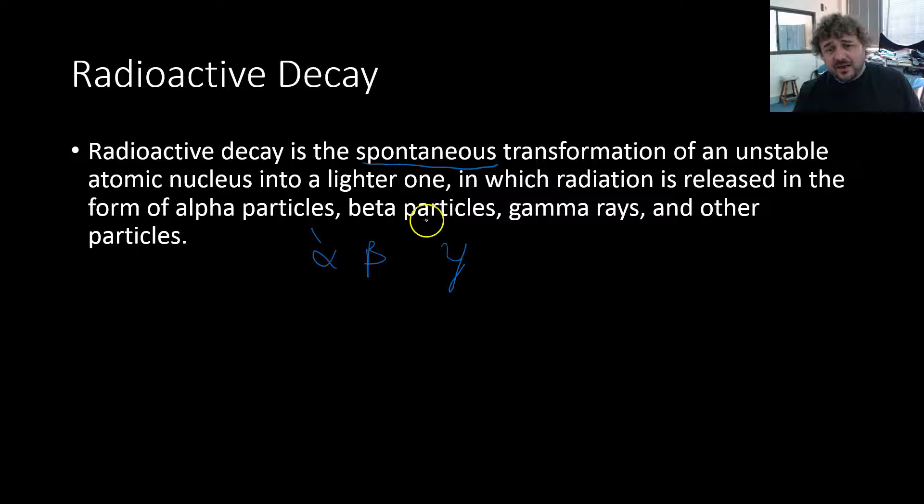Now there is also the gamma rays which we would write like this. But the gamma particles are released with either a beta particle or an alpha particle. They're not released on their own. And there are other types of particles that can happen such as electron capture.